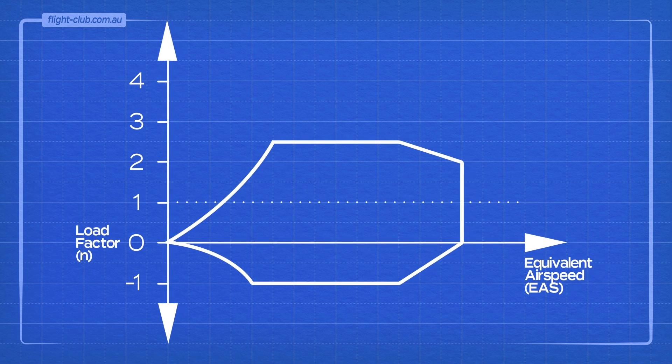In simple terms, this diagram represents how much load factor can be exerted on the airplane at a particular airspeed to avoid structural damage or failure. Let's identify some of the features of this diagram.